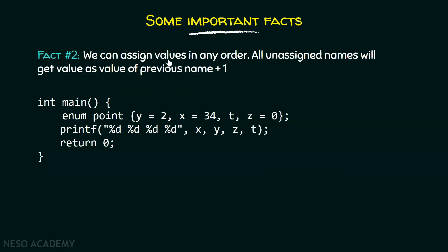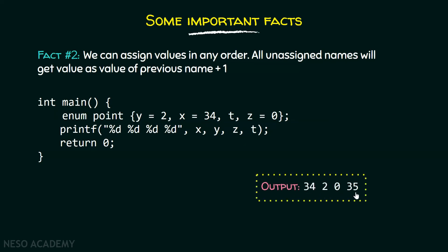Fact number two: we can assign values in any order. All unassigned names will get the value of the previous name plus one. Here we have y equal to two, x equal to 34, no value for t, and z equal to zero. So t will get value 35, because the value of the previous name is 34, and 34 plus one is 35. The output when printing these names on screen is 34, 2, 0, 35.